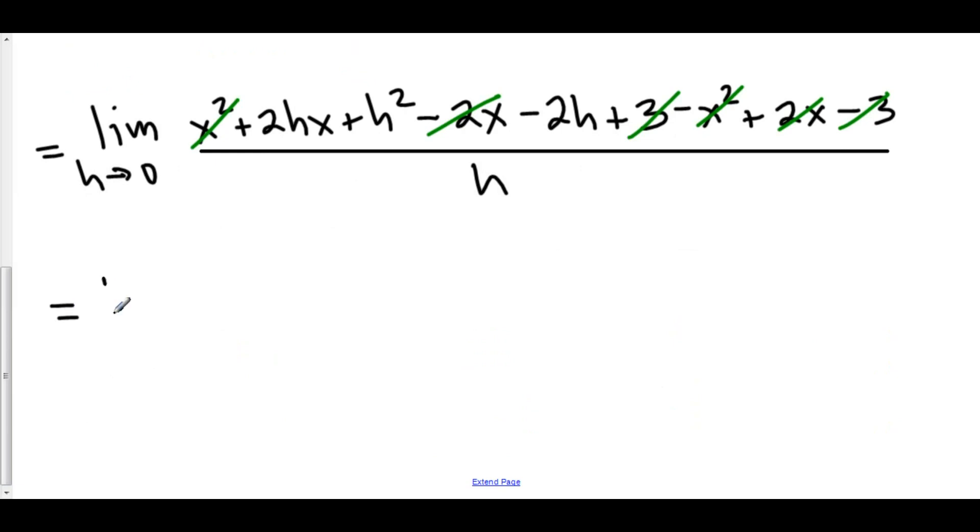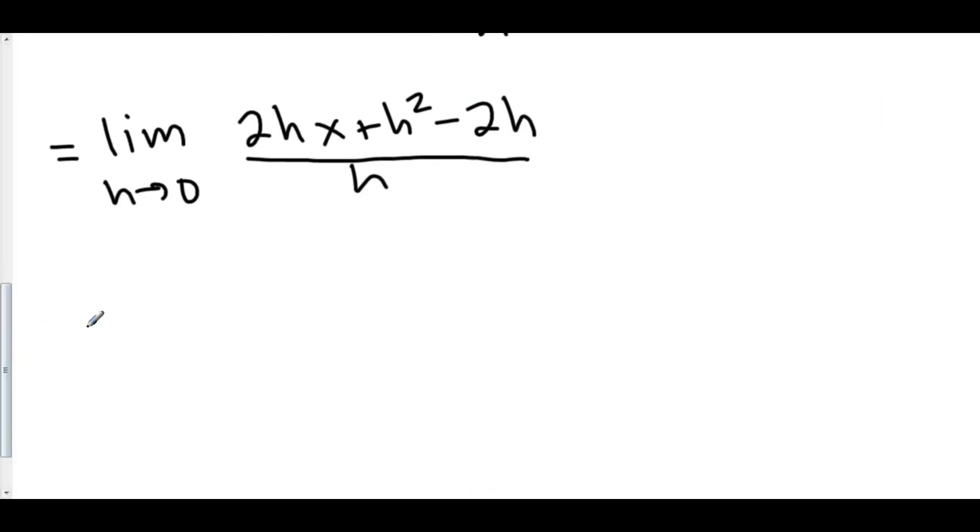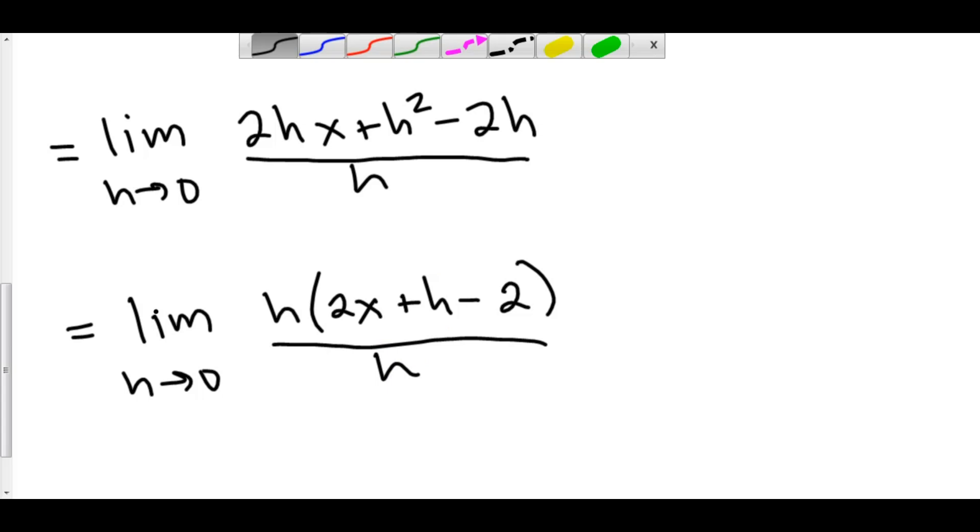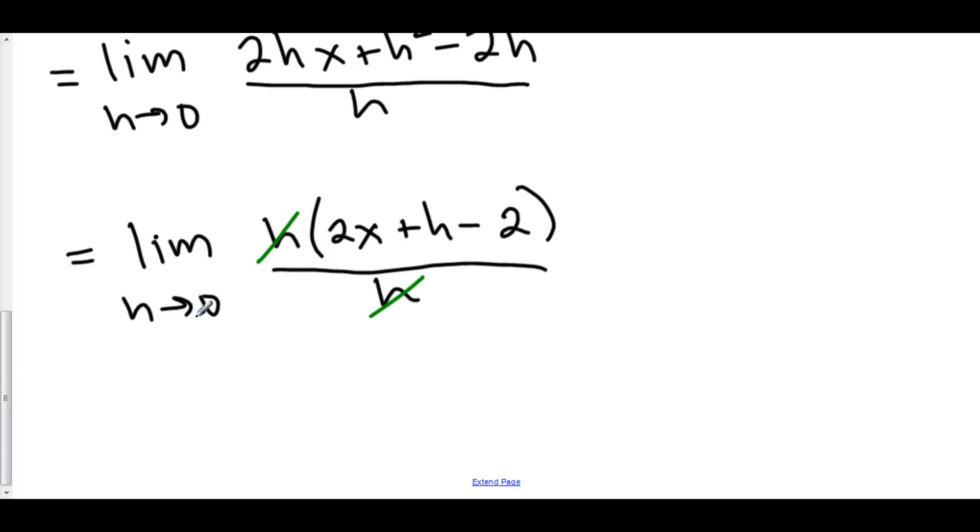The limit as h approaches 0 of 2hx plus h squared minus 2h all over h. From the top, we can factor out h. So here we have the limit as h approaches 0 of h times 2x plus h minus 2 all over h. And once again, our h's cancel out, and then we can plug 0 into h.